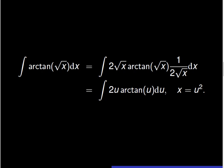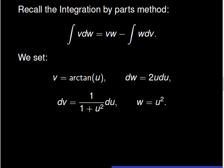In order to compute the integral of 2u times arctangent of u du, we have to use the integration by parts method. In this new approach, we set v equal to arctangent of u and dw equals 2u du. Thus, dv equals the fraction 1 over the quantity 1 plus u squared du, and w equals u squared.